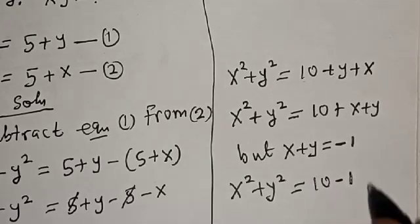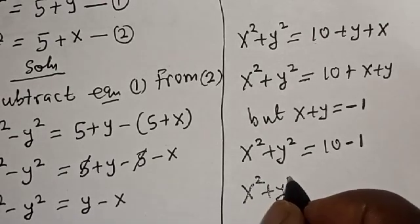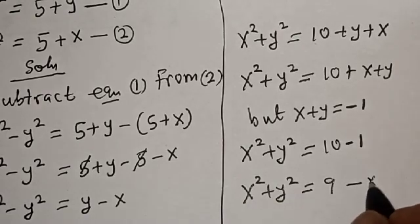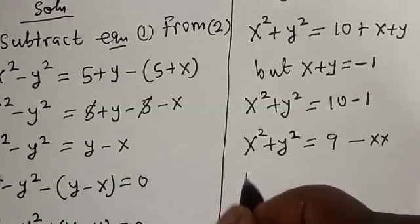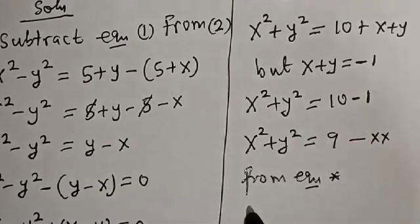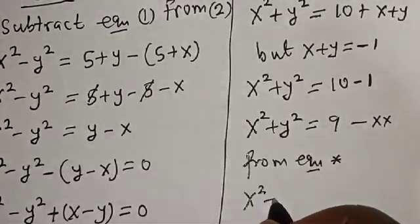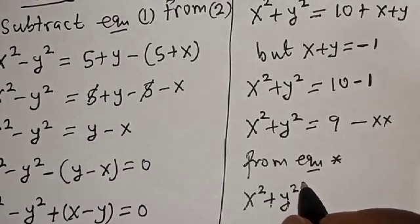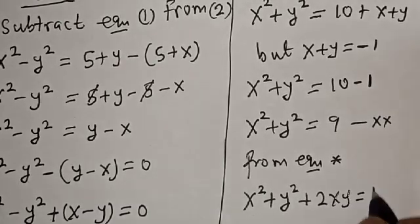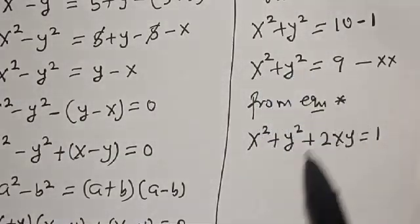Since x plus y equals minus 1, we substitute: x squared plus y squared is equal to 10 minus 1, which equals 9. Let's call this equation star star. From equation star, x squared plus y squared plus 2xy equals 1, and we know x squared plus y squared equals 9.